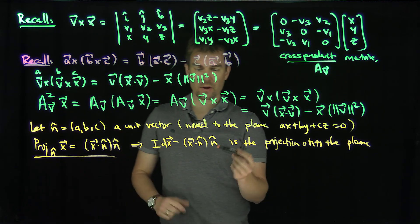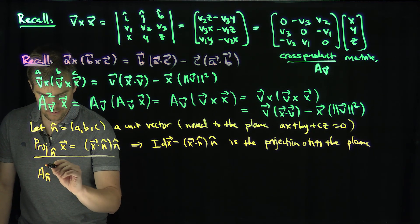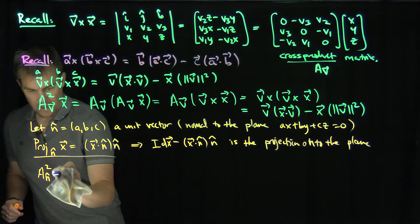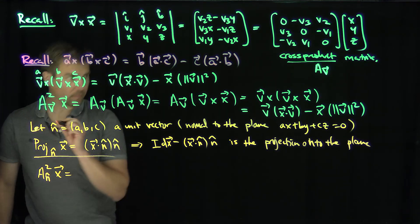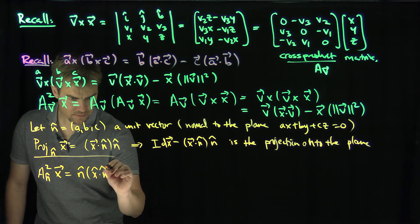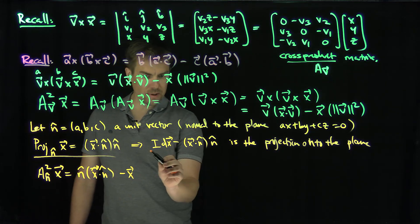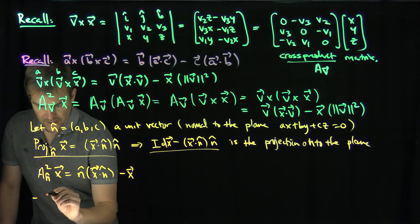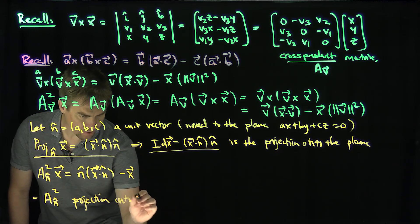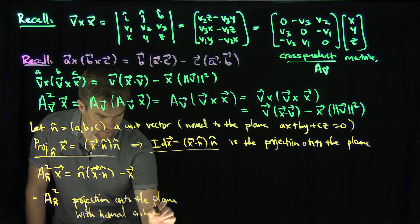Because the orthogonal projection onto the normal vector, and the identity minus that, is exactly perpendicular to it, so it's the projection onto the plane. But we have a formula for this now. So what this says is: if I look at A_n̂ squared as an operator applied to x, that's going to be n̂(x dot n̂) minus x times 1, since n is a unit vector. So negative A_n̂ squared is the projection onto the plane with normal vector (a, b, c).